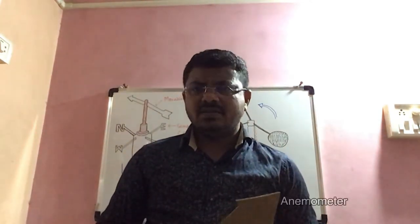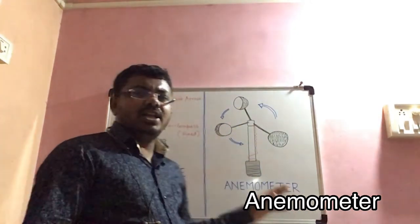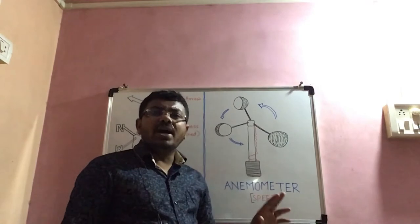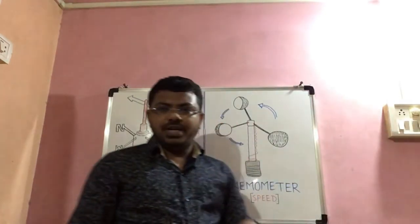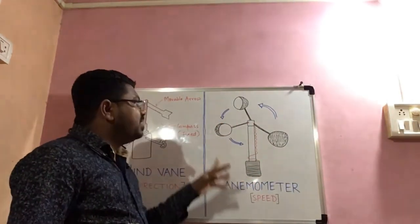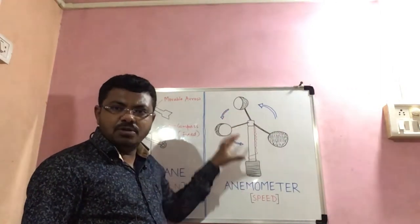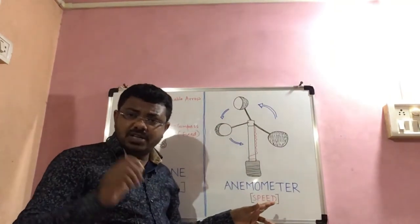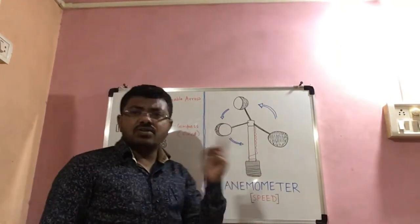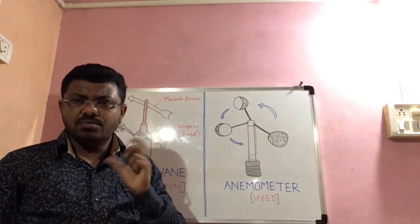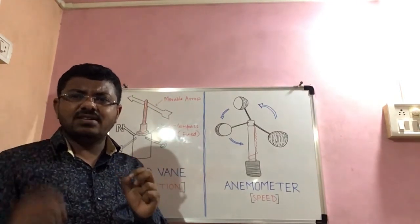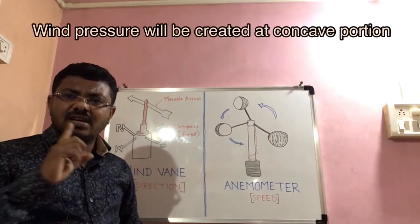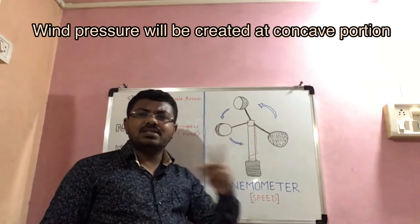The second important instrument is known as the anemometer. The anemometer is used to identify the speed of the wind. Looking at the anemometer, there are three cup-shaped curves. The slightest wind movement will start rotating this anemometer — the cups will start rotating.